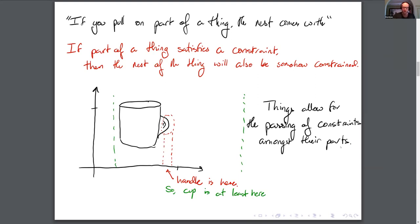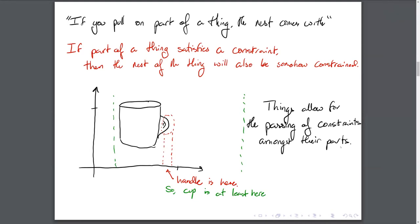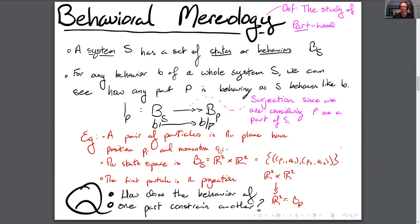We might find different kinds of coherent concepts lurking within our models that we didn't even put in. The way we get out of the physical intuition is by talking about satisfying a constraint instead of pulling. We mean that in the usual sense: there's just some property of the system, and satisfying that property is what it means to satisfy this constraint. So if one part of the system is constrained, then the rest of that system will be somehow constrained. Things are the objectification of the passing of constraints among parts of a system. We didn't end up with a theory of things, but we did end up with a theory of passing constraints.